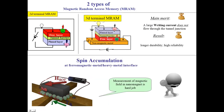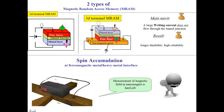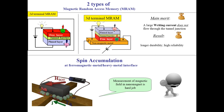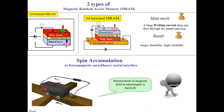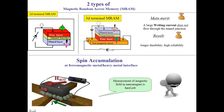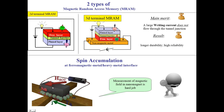The main goal of this work is to optimize the writing mechanism of a three-terminal MRAM cell. The major merit of the three-terminal MRAM cell is that a large writing current does not flow through the tunnel junction, which substantially improves memory durability and reliability. The physical mechanism of the magnetization reversal in the three-terminal MRAM is spin accumulation at the ferromagnetic metal–heavy metal interface.